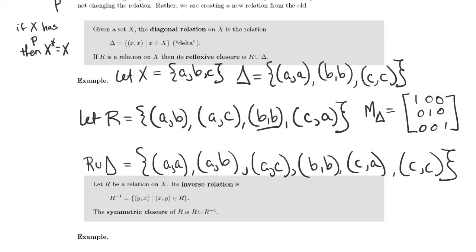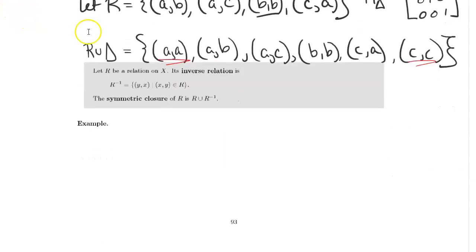Notice that we added the pairs AA and CC. It was not necessary to add the pair BB because we already had it. So that's one example.